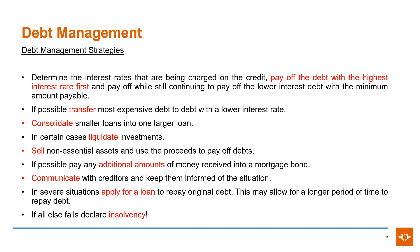Some strategies to manage excessive debt levels are: pay off debt with a higher interest rate first; transfer more expensive debt into debt with a lower interest rate; consolidate smaller loans into one larger loan; liquidate investments; sell non-essential assets; pay additional amounts into a mortgage bond; communicate with creditors; apply for a loan to repay the original debt; and if all else fails, declare insolvency.